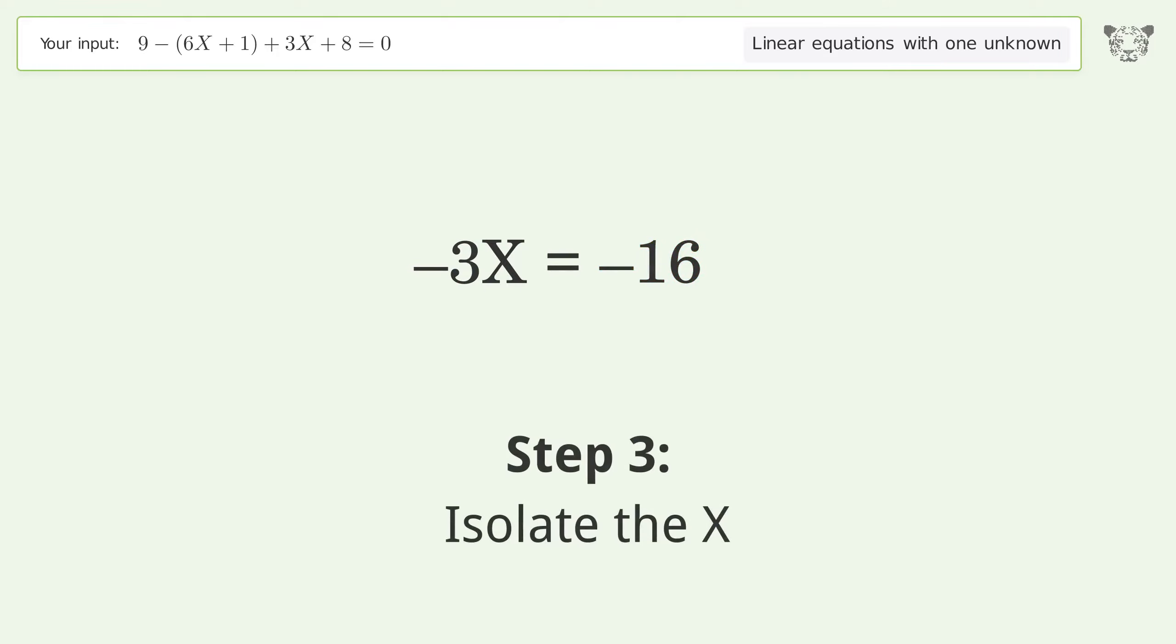Isolate the x. Divide both sides by negative 3. Cancel out the negatives.